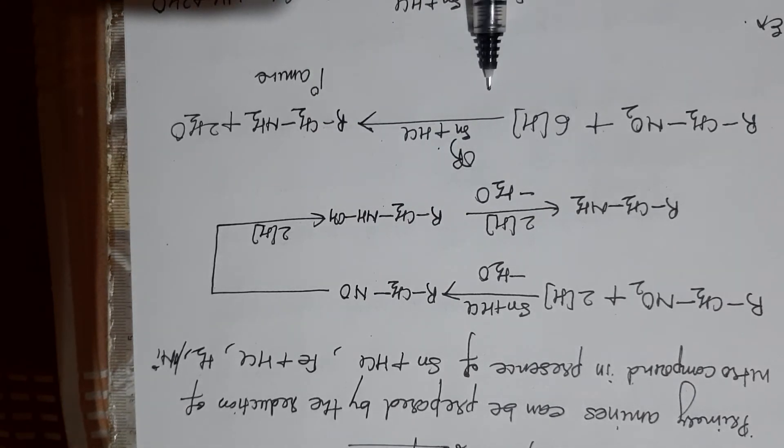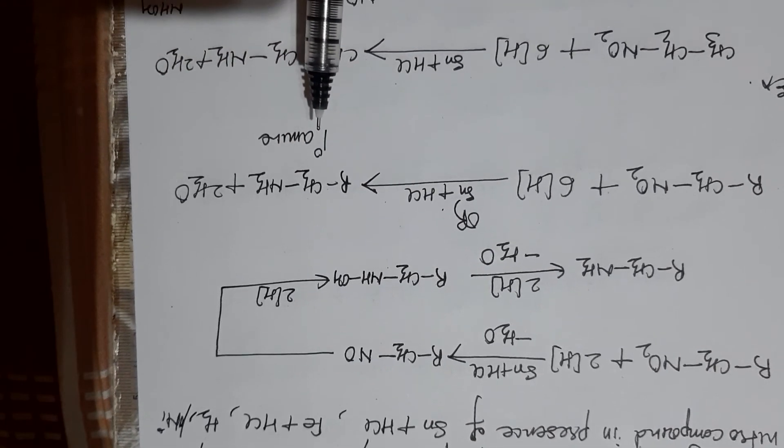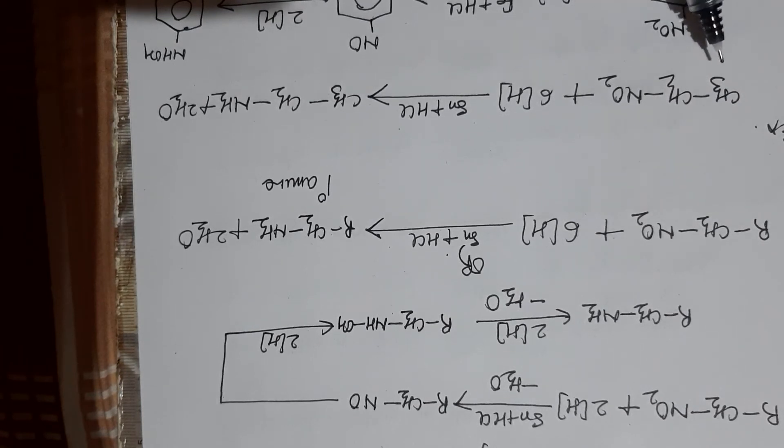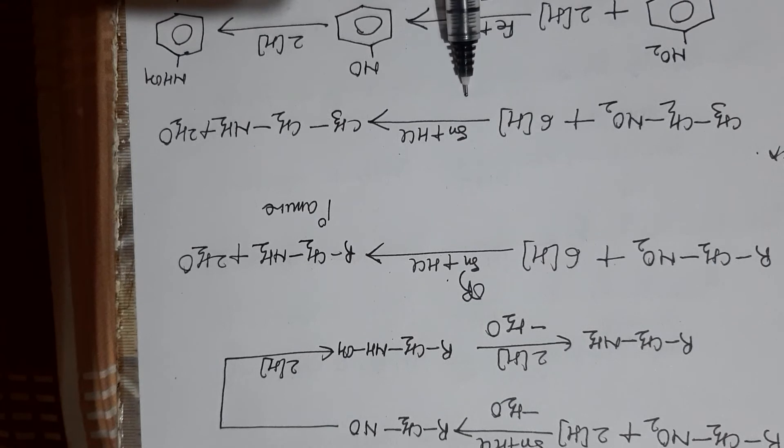If you want to prepare only primary amine, not this nitroso compound, you can write like this also: by using six hydrogens in one step you can prepare primary amine and water. I'm giving you one example here. This is nitroethane.